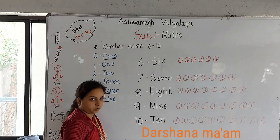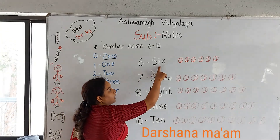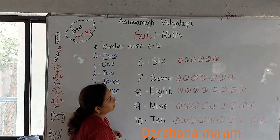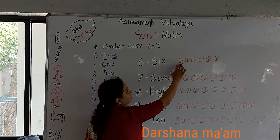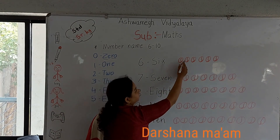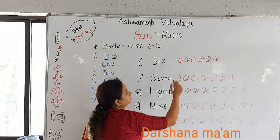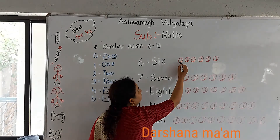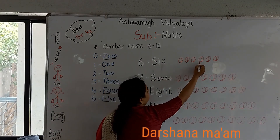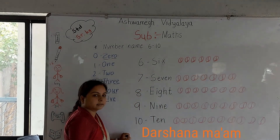6 - S-I-X - 6. And count with me. Our object is ball. Count with me: 1, 2, 3, 4, 5, and 6.